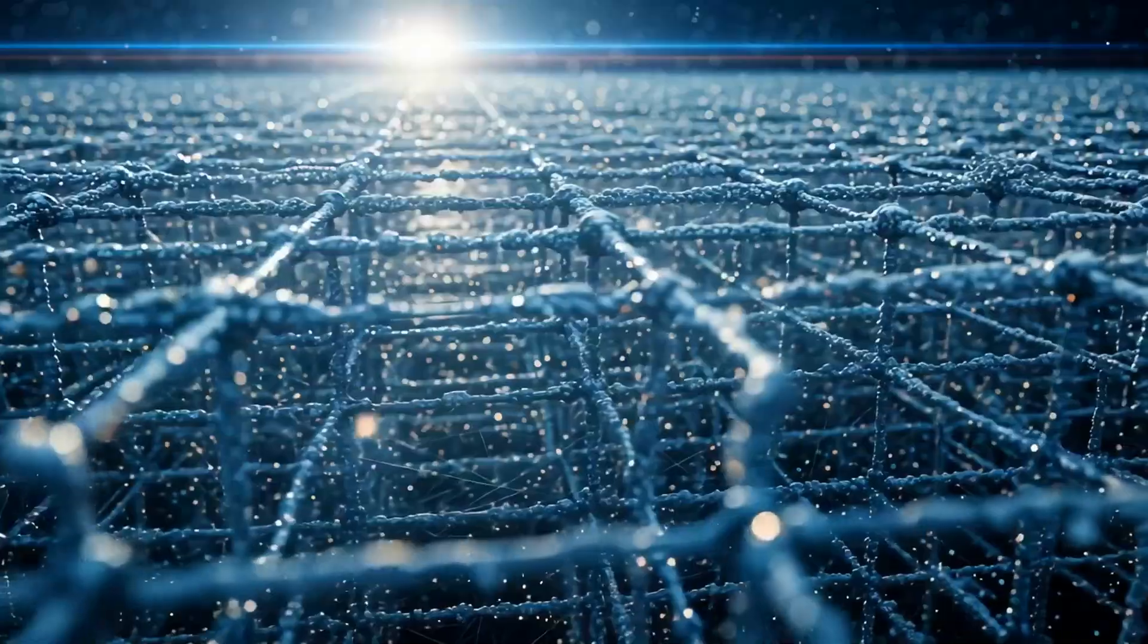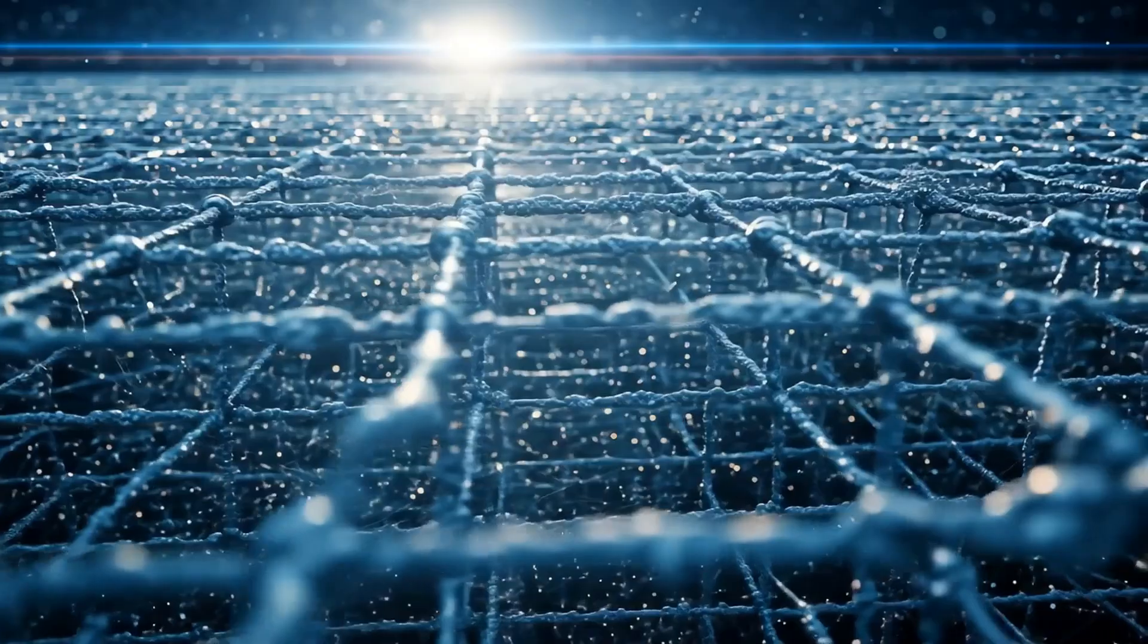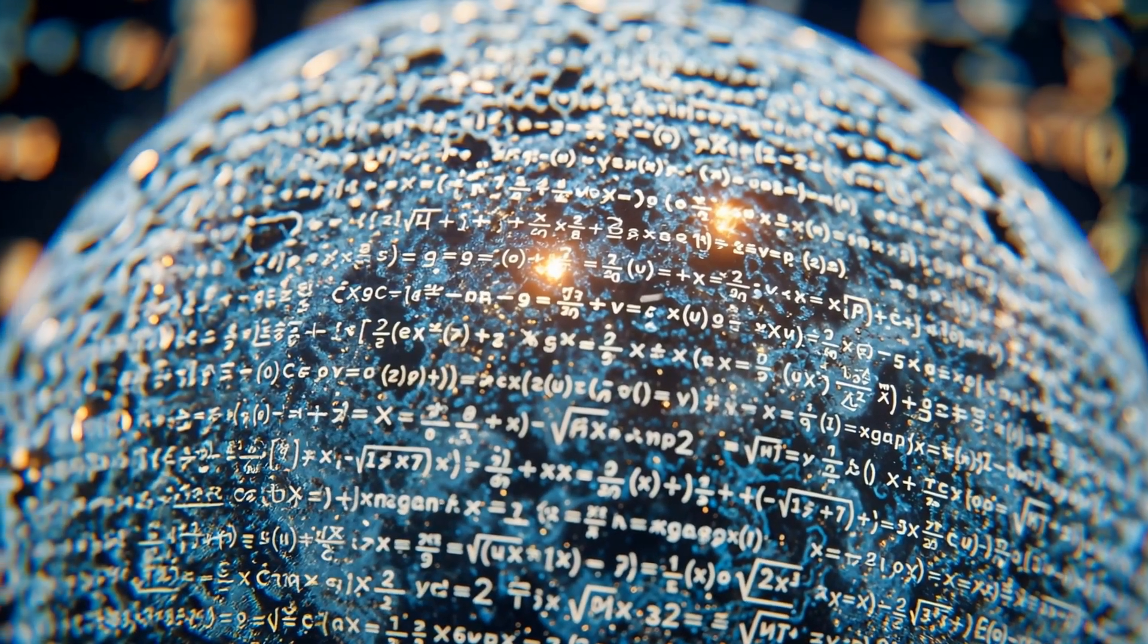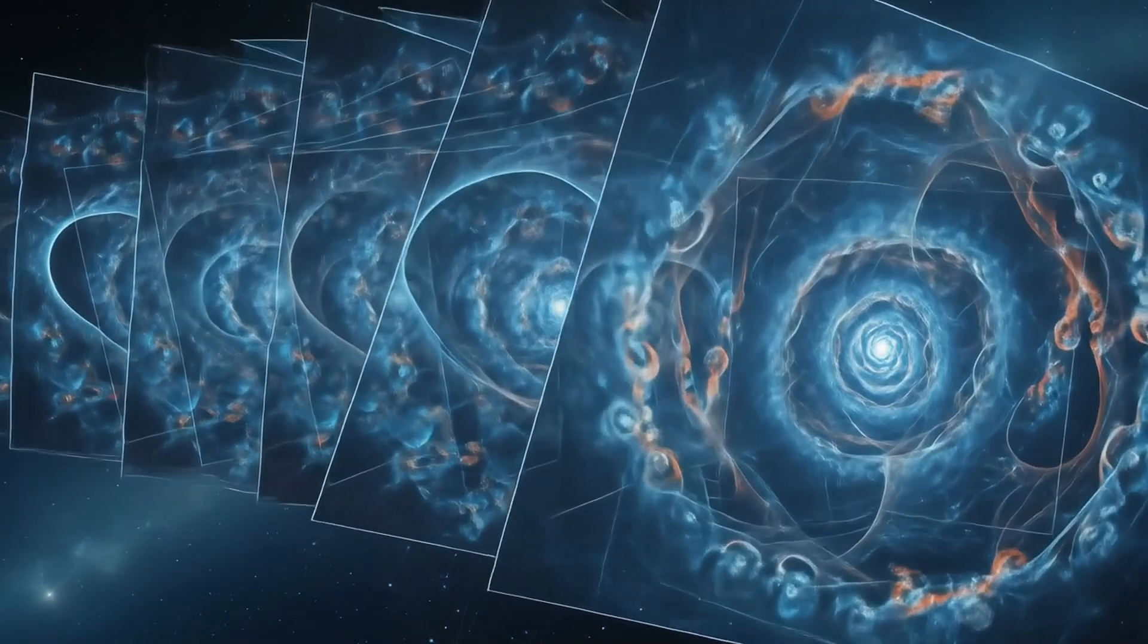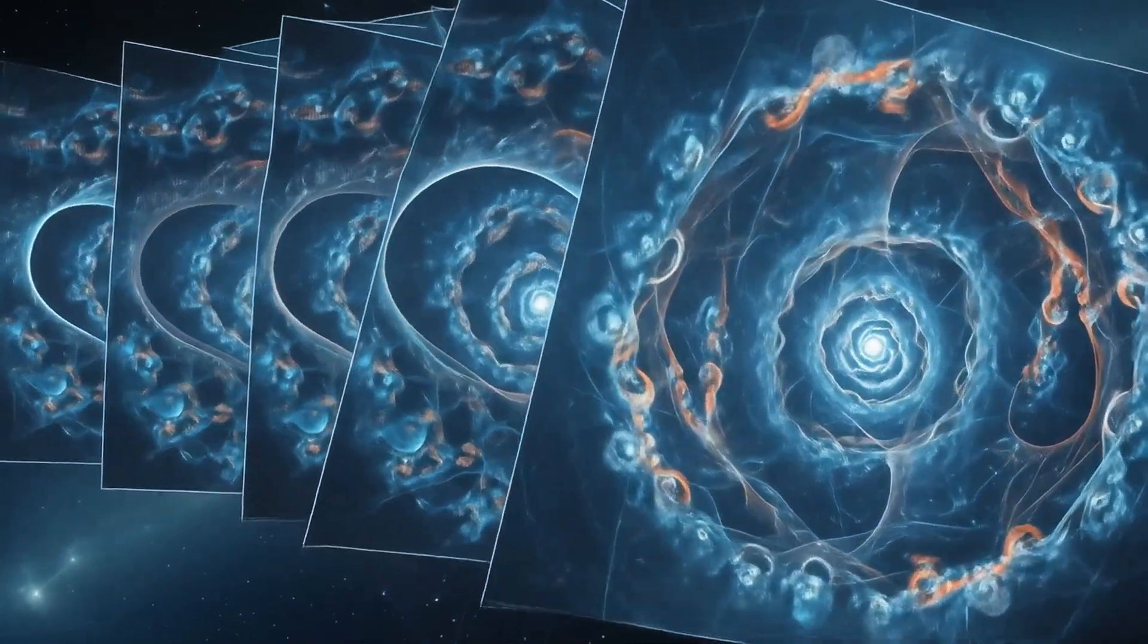As Hawking radiation strikes the qubit, it collapses the wave function. And through entanglement, the result is reflected across the entire grid. This renders the hologram, frame by frame, tick by tick. The fractal writes itself.